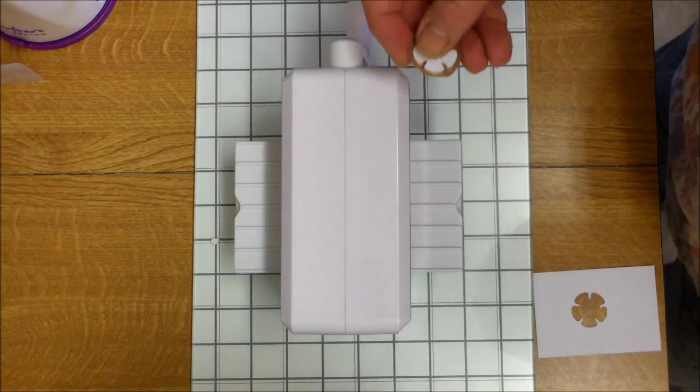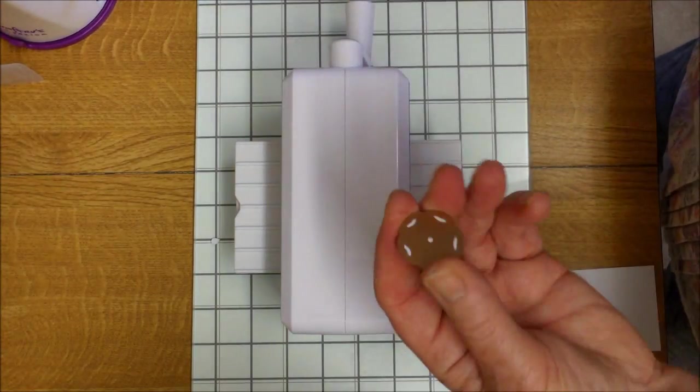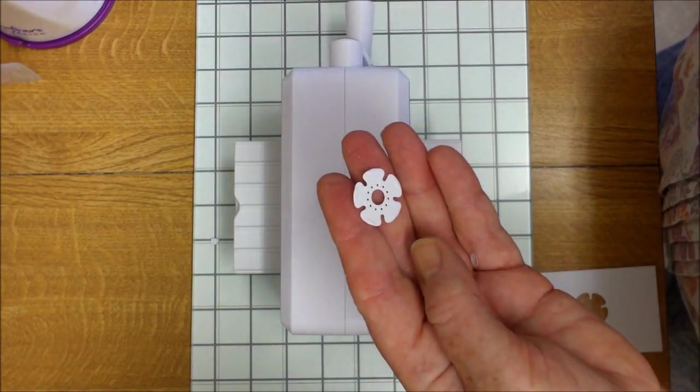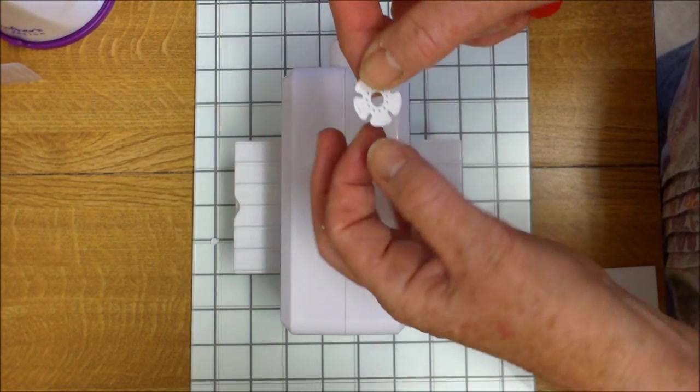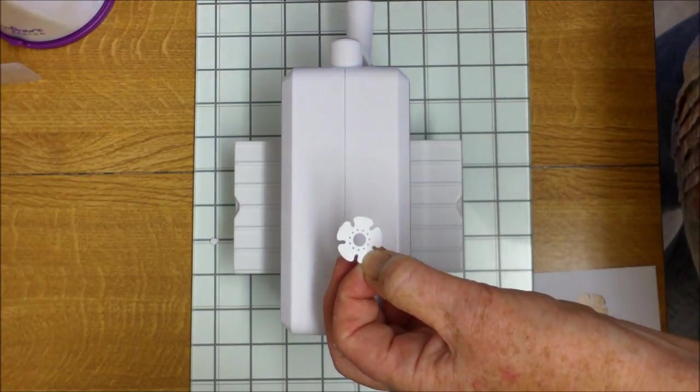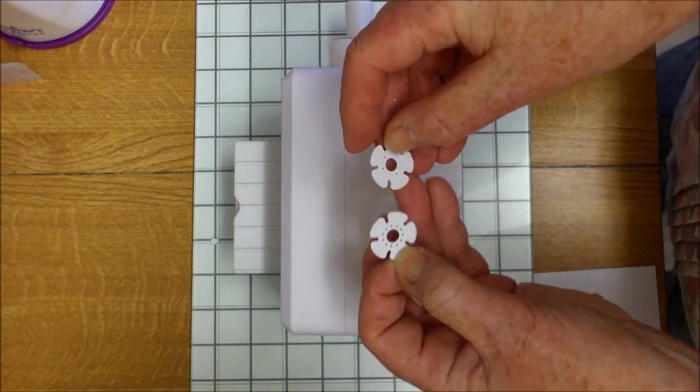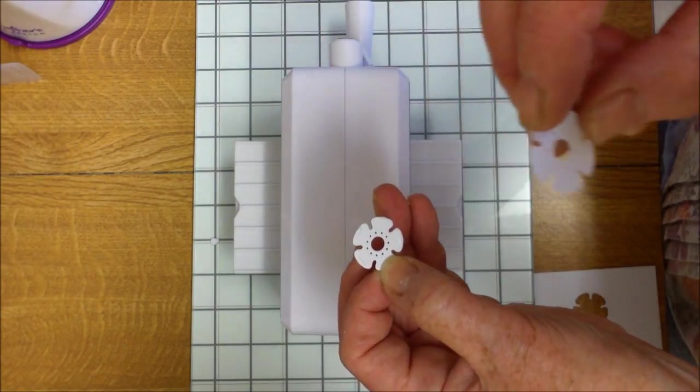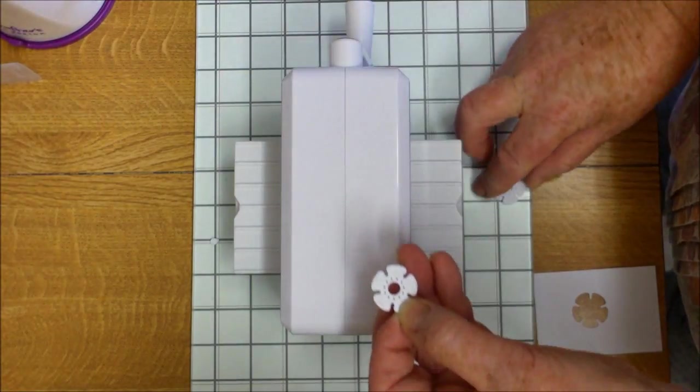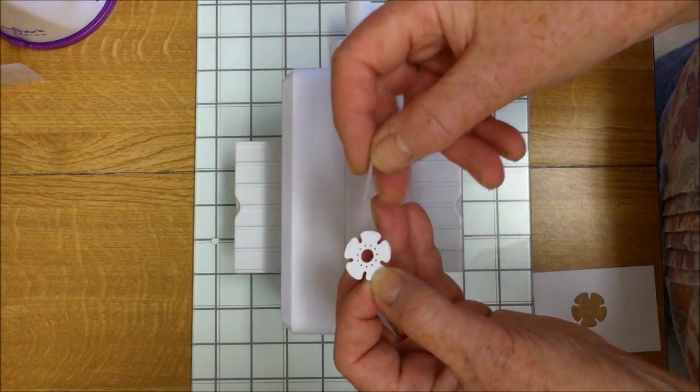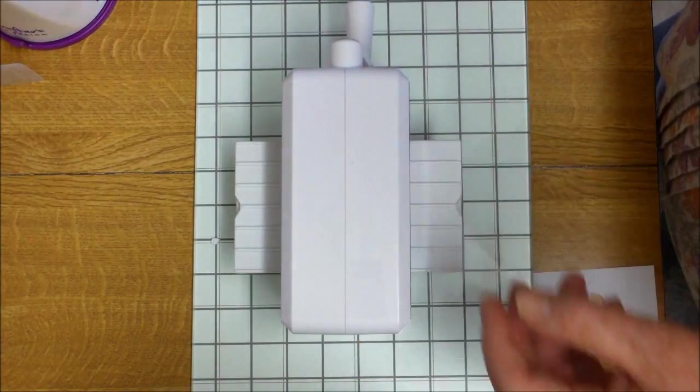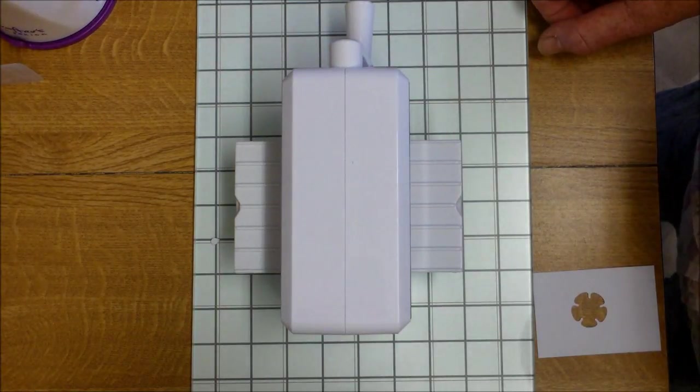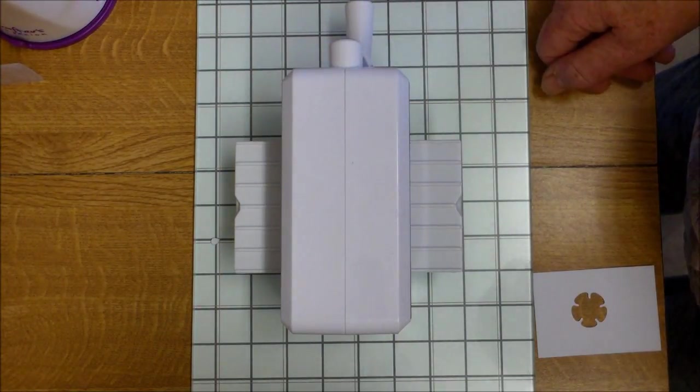Here it is, using the pokey tool, and again we've got very good detail on that. Comparing the two, I think the detail on the Spellbinders has come out better, but it is using a Spellbinders die. So, that's embossing.